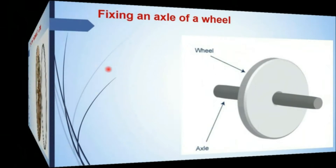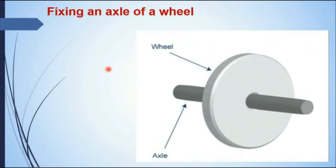Another application is fixing an axle of a wheel. The axle of the wheel is cooled in liquid nitrogen, and by this way it contracts and its diameter reduces. The hole in the wheel is uniformly heated and the axle is quickly inserted into the hole.